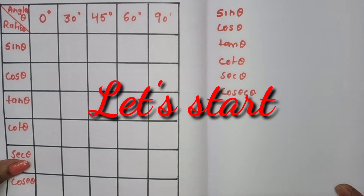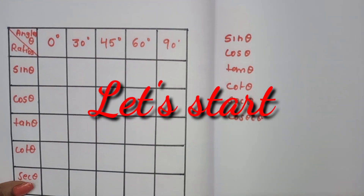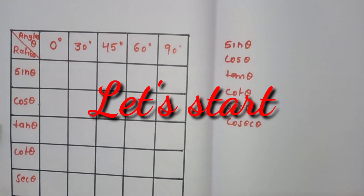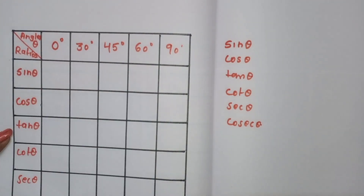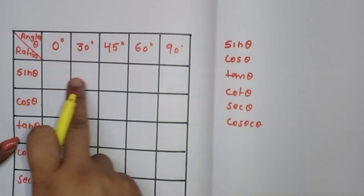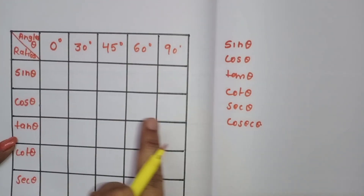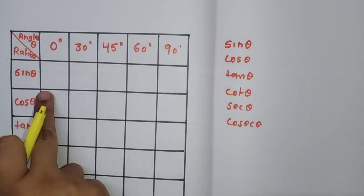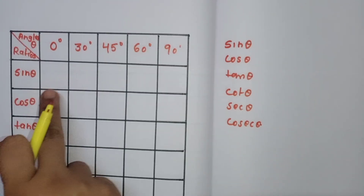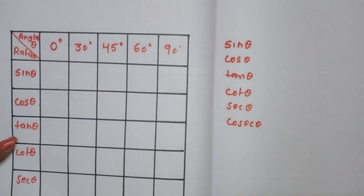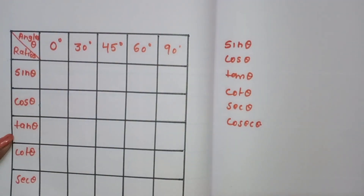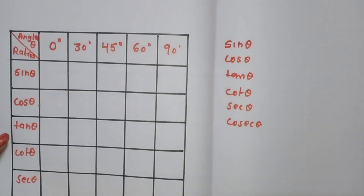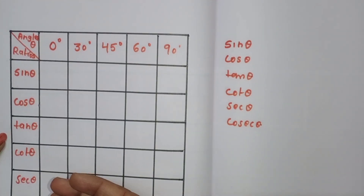The trick is how we make the trigonometric table. If you can remember the trick, you can find all trigonometric values — sin 0°, sin 30°, sin 45°, sin 60°, sin 90° — and from those, all other trigonometric ratios.